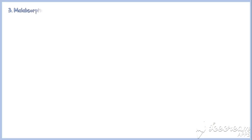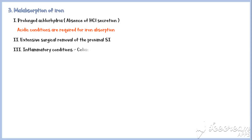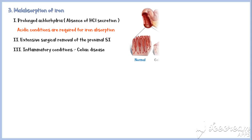Malabsorption of iron is another cause of iron deficiency anemia. A common situation where malabsorption occurs is prolonged achlorhydria, because acidic conditions are required for the absorption of iron. In addition, extensive surgical removal of the proximal small intestine and inflammatory conditions like celiac disease also cause malabsorption of iron.